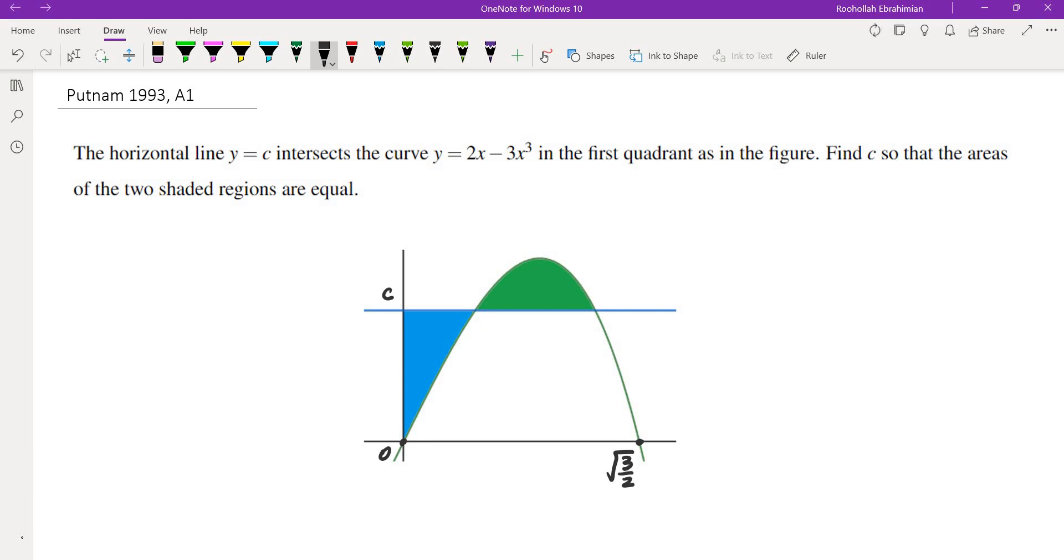If you solve for x you get x squared equals 2 thirds, and you take the square root you get this one. And then there's also an intercept on the other side, but that's not what we're talking about.